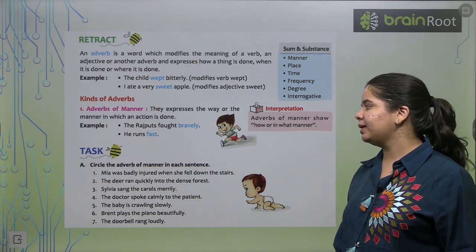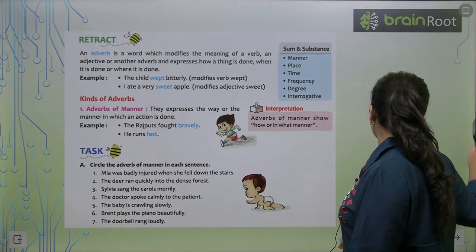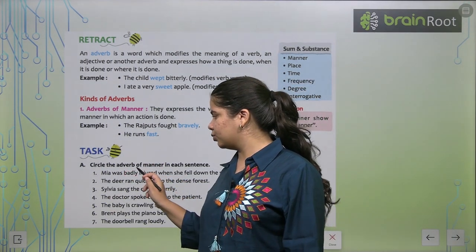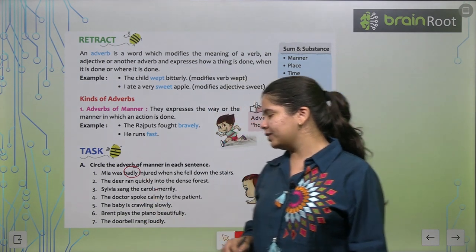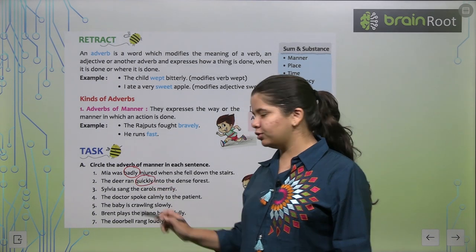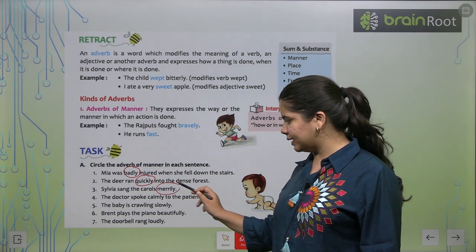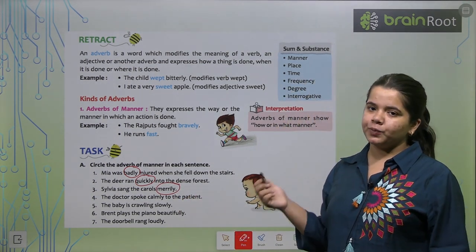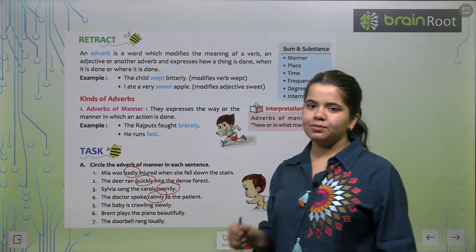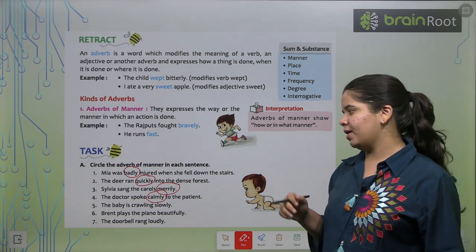Now, let's circle the adverb of manner. Mia was badly injured when she fell down the stairs. So what is our adverb of manner? Yes, badly. The adverb of manner is badly. The deer ran quickly into the dense forest. Quickly is our adverb of manner. Next, Sylvia sang the carols merrily. Merrily is the way she sang. So merrily is our adverb of manner.